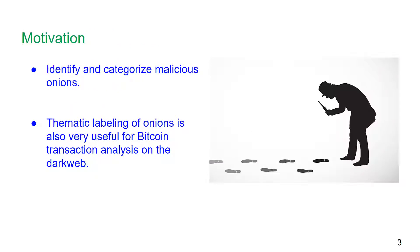The primary motivation for this work is to identify and categorize malicious onion sites. This also helps us perform a lot of other things — one such thing is to identify and analyze the nature of Bitcoin transactions. For example, we can mark Bitcoin addresses that occur frequently on drug-related onion sites and monitor them, even if their vendors created multiple sites to hide their true operations.